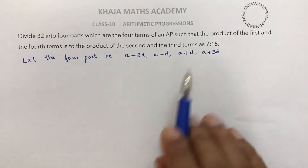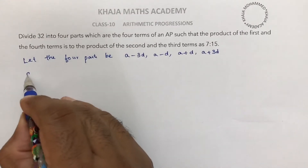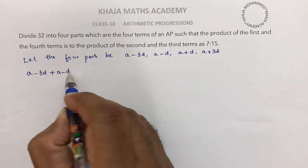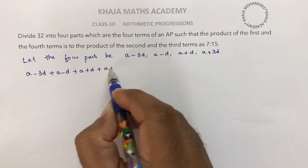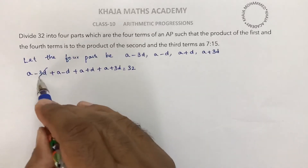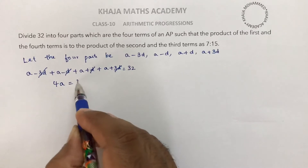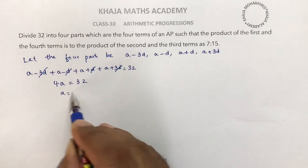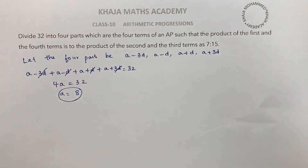Since we divide 32 into four parts, adding all four terms gives 32: (a − 3d) + (a − d) + (a + d) + (a + 3d) = 32. The d terms cancel out, leaving 4a = 32, so a = 8.